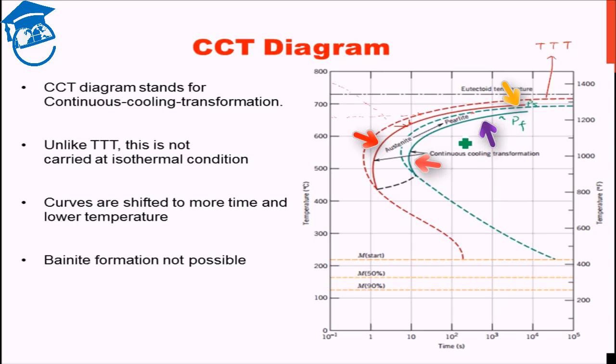Now in the case of CCT curve, below 550 degrees Celsius, we have bainite formation. But now suppose that you are continuously cooling the material. And since this is a maxima region, if you think about it, this is called the nose of the TTT curve.